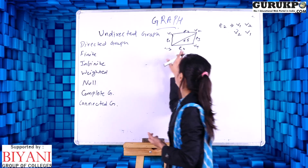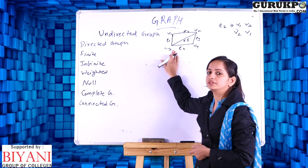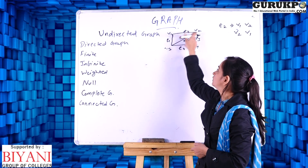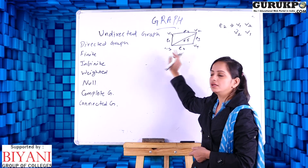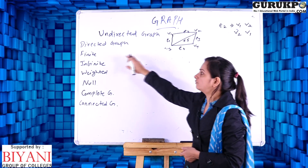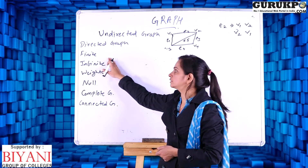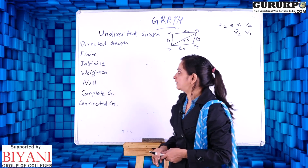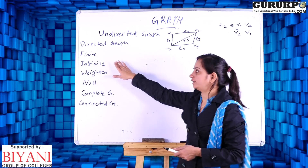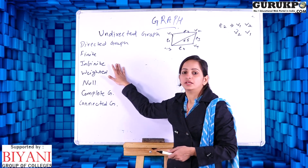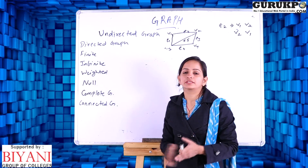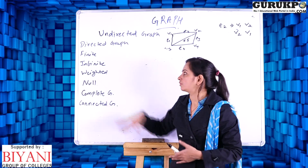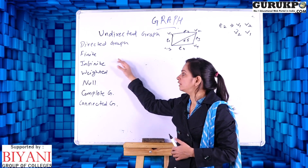For example, this graph is a finite graph because there are one, two, three, and four vertices — we can count them, so there is a finite number of vertices. This is called a finite graph. On the other hand, if the number of vertices is infinite, then that type of graph is called an infinite graph.